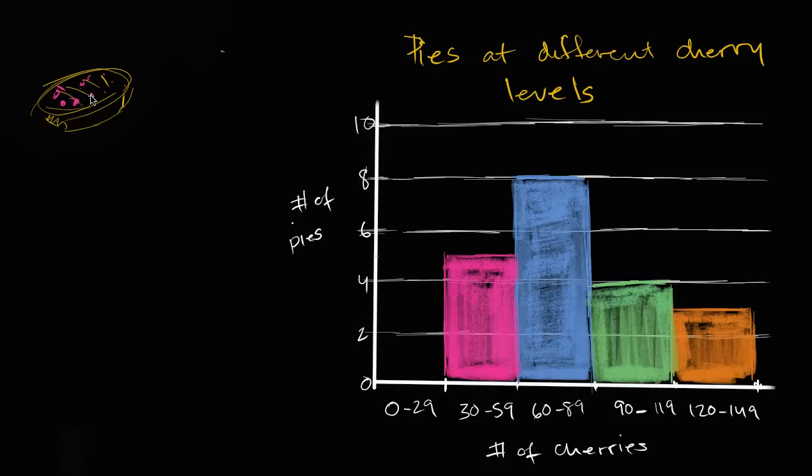But you take each of the pies in your store and you count the number of cherries on it. So this pie right over here is 1, 2, 3, 4, 5, 6, 7, 8, 9, 10. Let's say you keep counting and let's say it has 32 cherries.